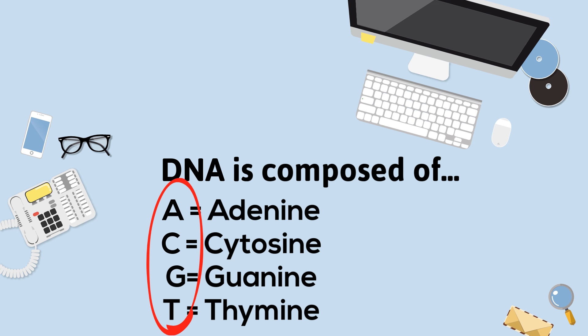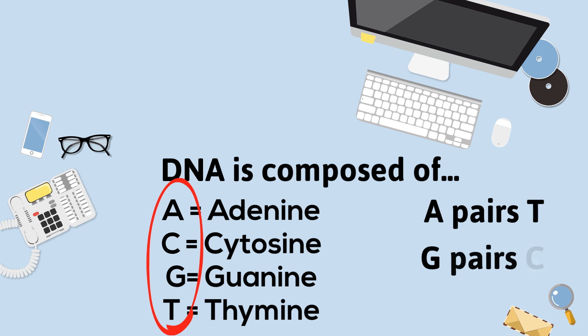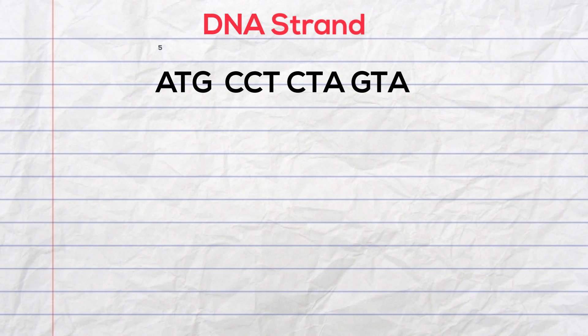A always pairs with T and G pairs with C. So if we have this strand of DNA and move from 5 to 3, for the complementary strand you will have A paired with T, T with A, G with C, and you can watch the rest.